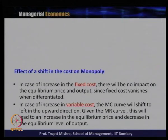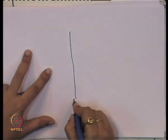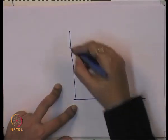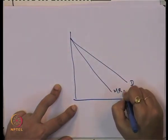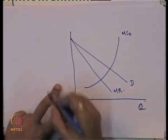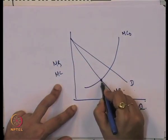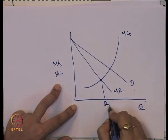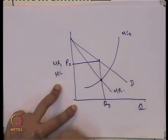We will see graphically how the change in variable cost disturbs the equilibrium position. This is our demand function, and corresponding to this we get the output level Q0 and the price P0.